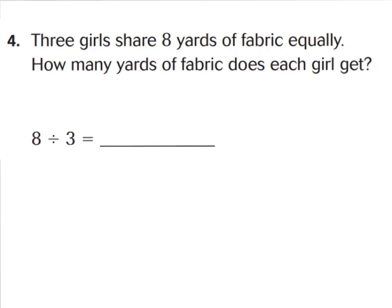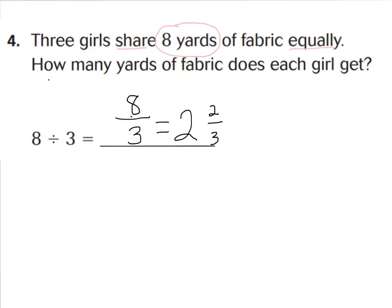Question four says three girls share eight yards of fabric equally. I see 'share' and 'equally' — eight yards is the dividend, so our equation is eight divided by three, written as the fraction eight-thirds. Let's change that to a mixed number to know how many yards each girl gets. Treating it as a division problem: how many groups of three go into eight? Two groups of three go into eight, that's six, with two left over.